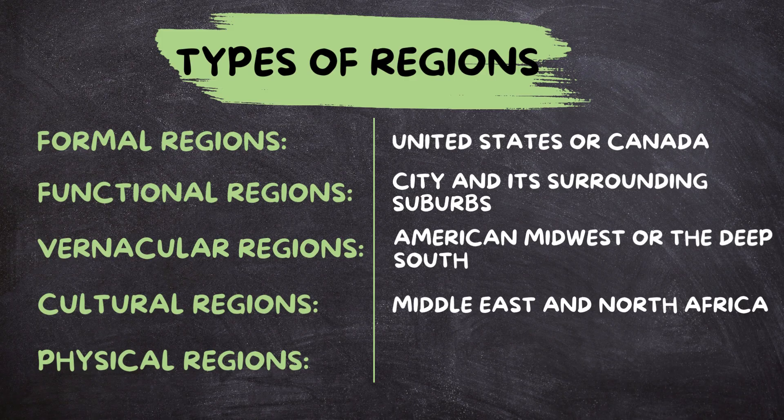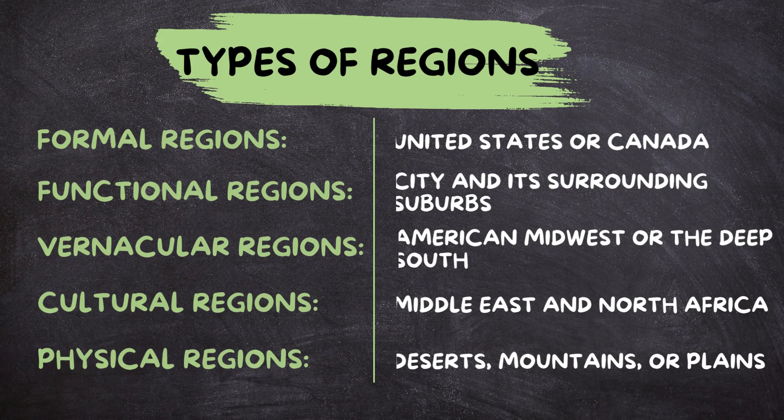Physical regions: these regions are defined by natural features such as landforms, climate, vegetation, or soil types. Examples include deserts, mountains, or plains.